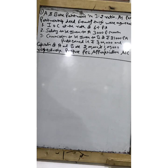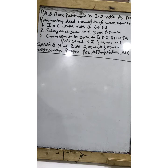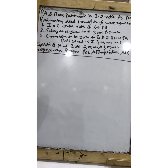First question. A and B are partners in 3:2 ratio. As per the partnership deed, the following things were agreed: interest on capital at the rate of 6% per annum, salary to be given to A of ₹3,000 per month, commission to be given to B of ₹21,000 per annum. Profit earned is ₹3 lakh and capitals of A and B are ₹2 lakh and ₹1 lakh respectively. Prepare P&L appropriation account.